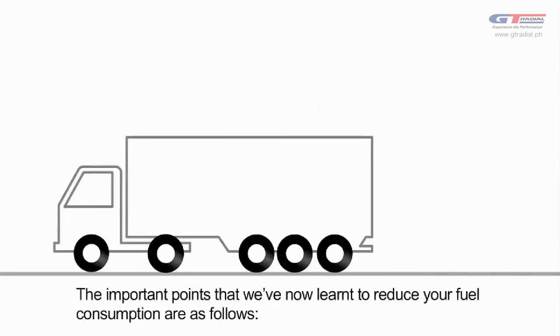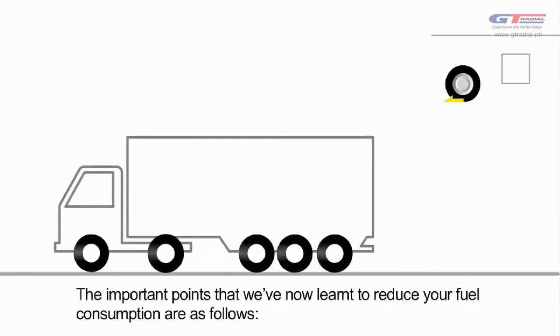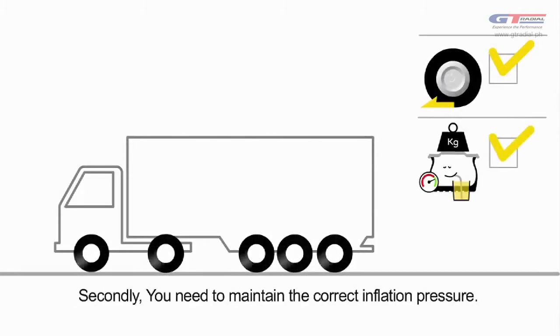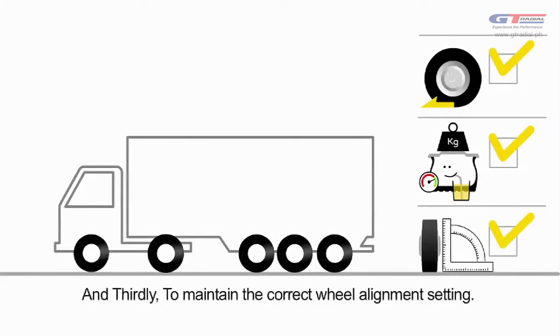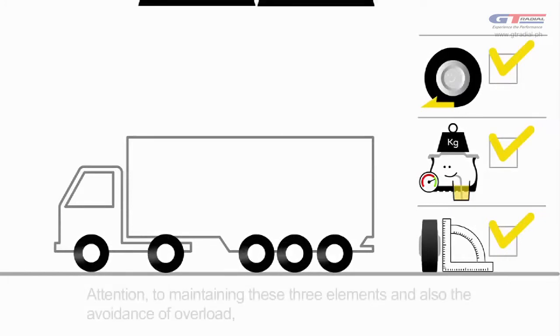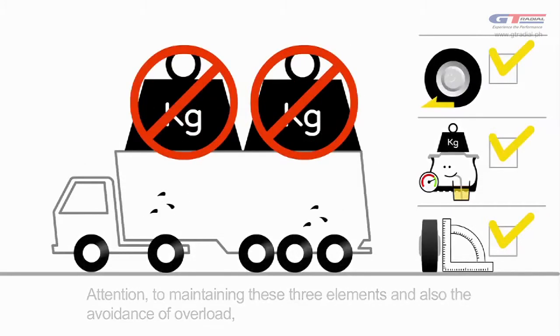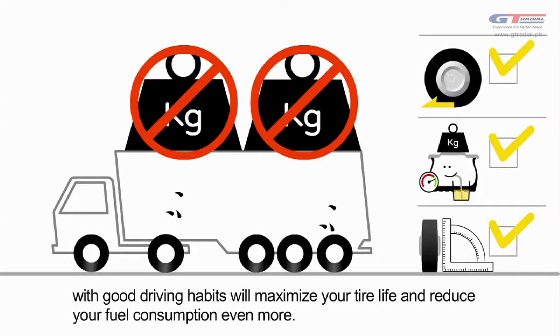The important points that we've now learned in order to reduce your fuel consumption are as follows. Firstly, you need the correct tire that exhibits low rolling resistance. Secondly, you need to maintain the correct inflation pressure. Thirdly, to maintain the correct wheel alignment setting. Attention to maintaining these three elements and also the avoidance of overload with good driving habits will maximize your tire life and reduce your fuel consumption even more.